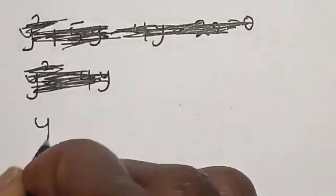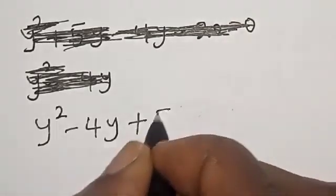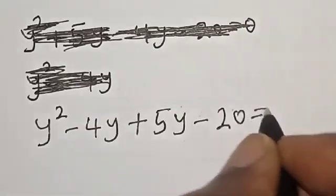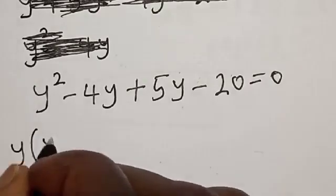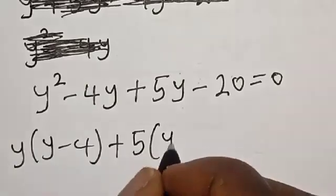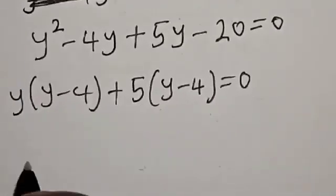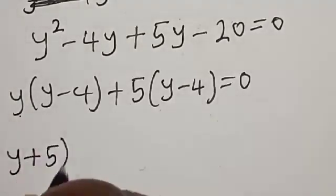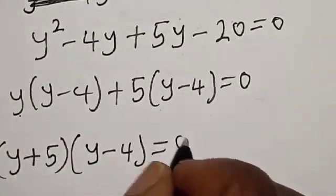Now, we have y square minus 4y plus 5y minus 20 is equal to 0. Then, y times y minus 4 is equal to 0. We have y plus 5, this y and 5 multiply by y minus 4 is equal to 0.